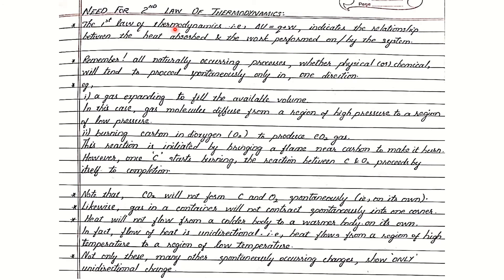The first law of thermodynamics, that is delta U equal to Q plus W, indicates the relationship between the heat exchanged and the work done on or by the system. It gives us the relationship between the change in internal energy of the system with the heat exchanged when work is done on or by the system. It does not provide any information about the spontaneity or feasibility of the process. It does not tell us whether the process is possible or not.